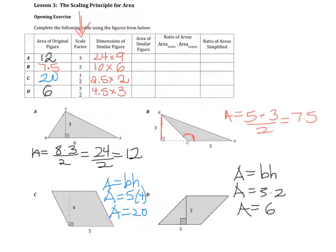The area of the similar figure is for part A and B, take the dimensions, multiply them, and divide it in half, and we get 108 for A. 10 times 6 is 60, divided in half is 30. 2.5 times 2 is 5, and 4.5 times 3 is 13.5. The reason why C and D we just multiply the dimensions is because the area formula is equal to base times height.